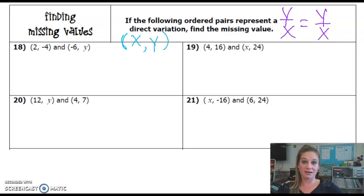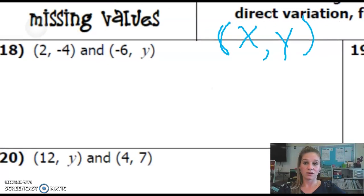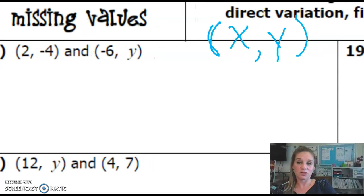So let's look at number 18 together. If we know that 2, negative 4 is a coordinate, that means that this is the X value and this is the Y value.